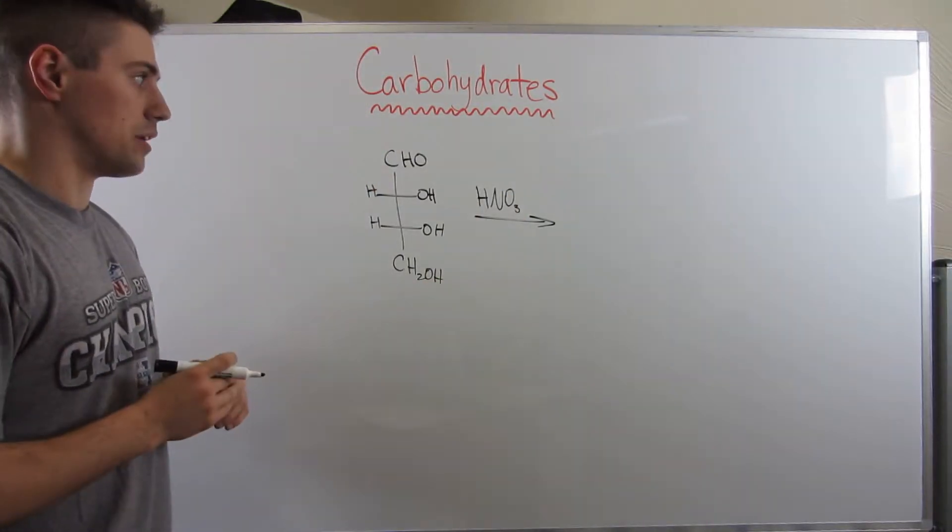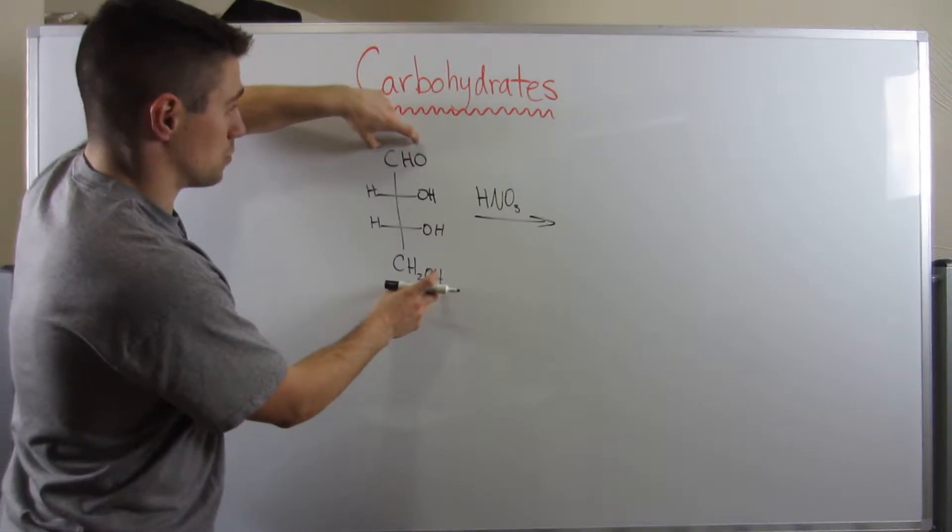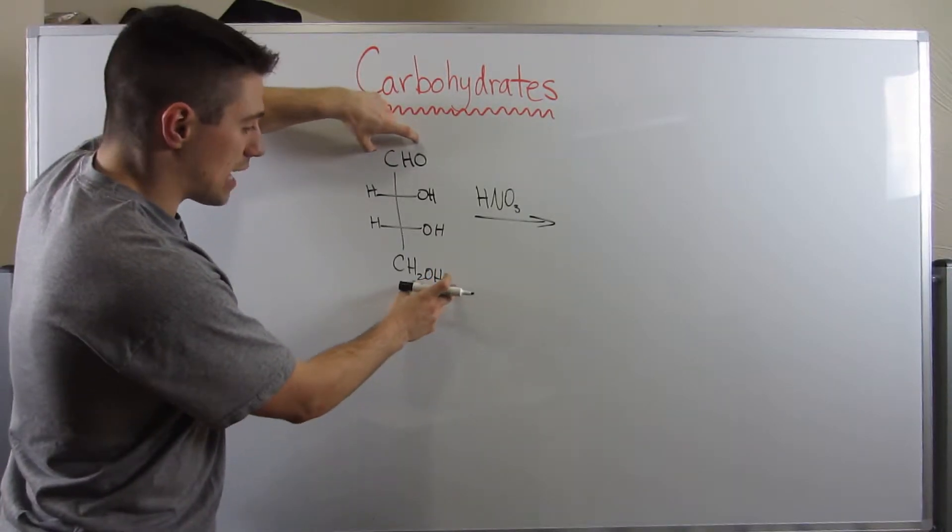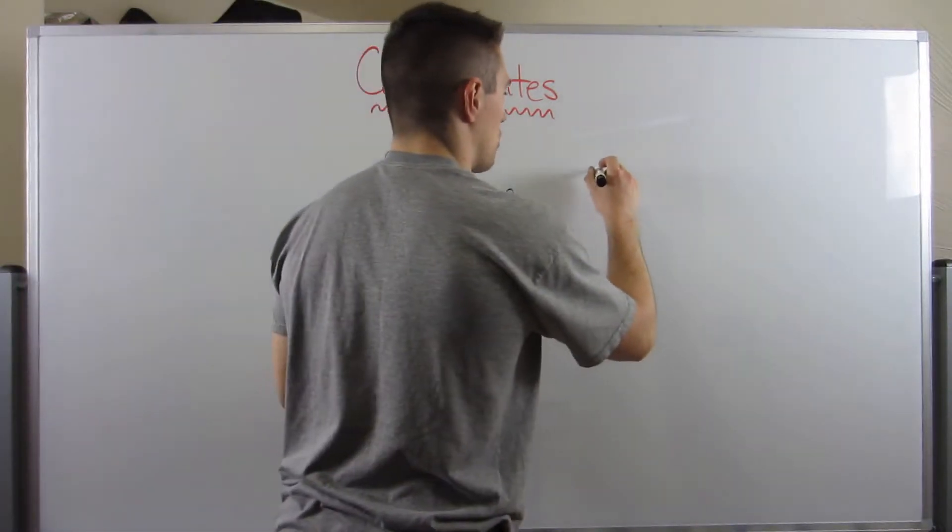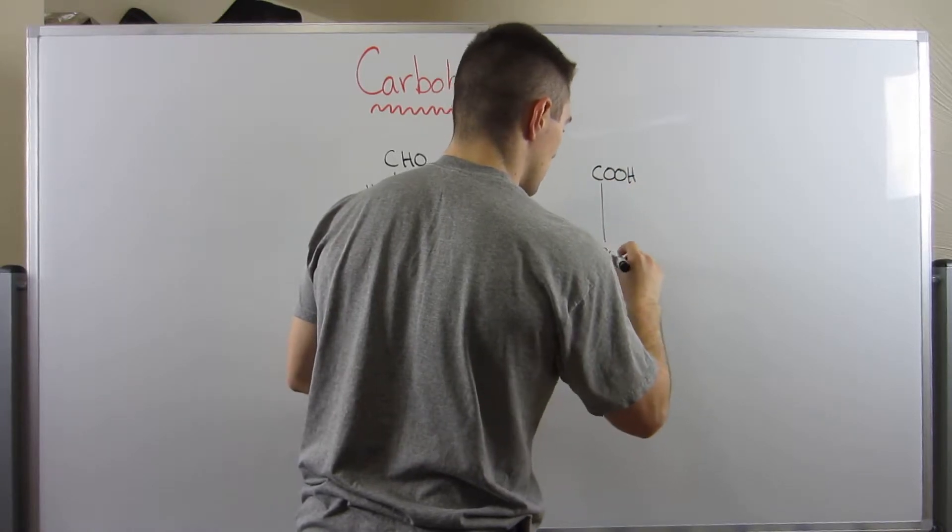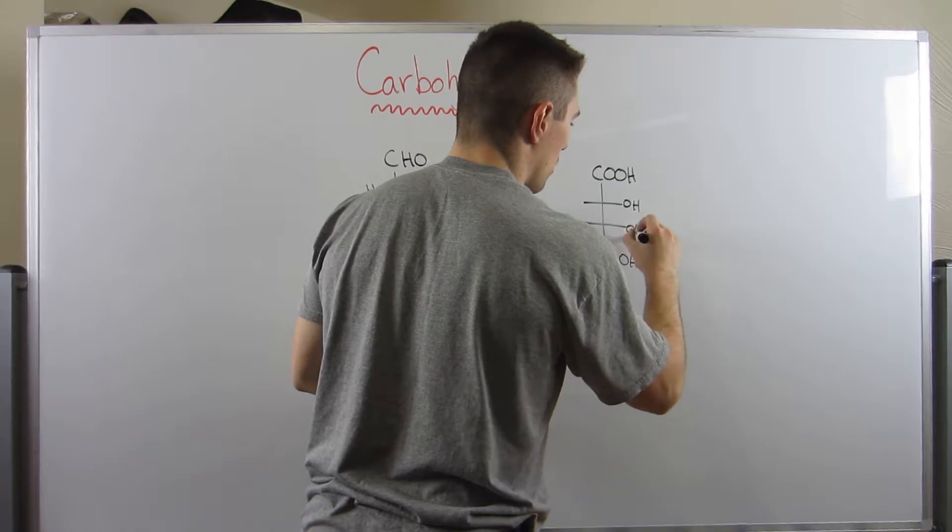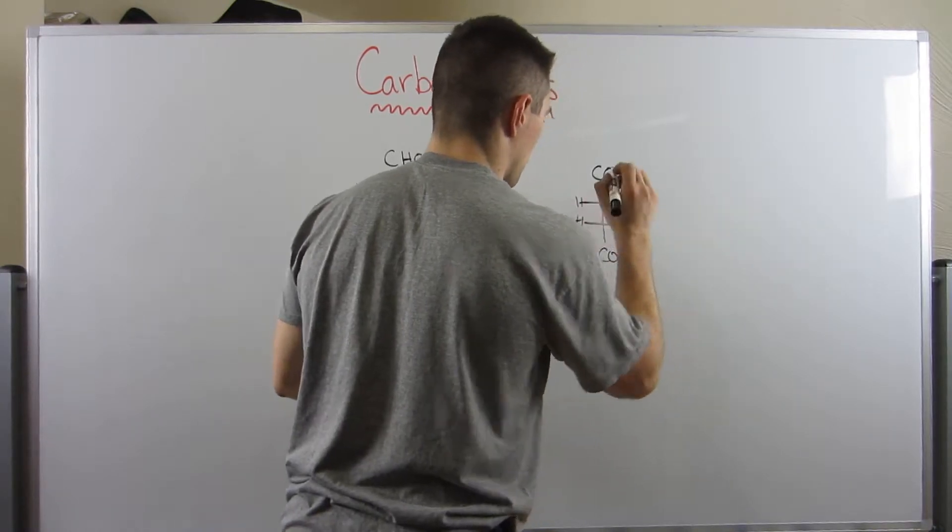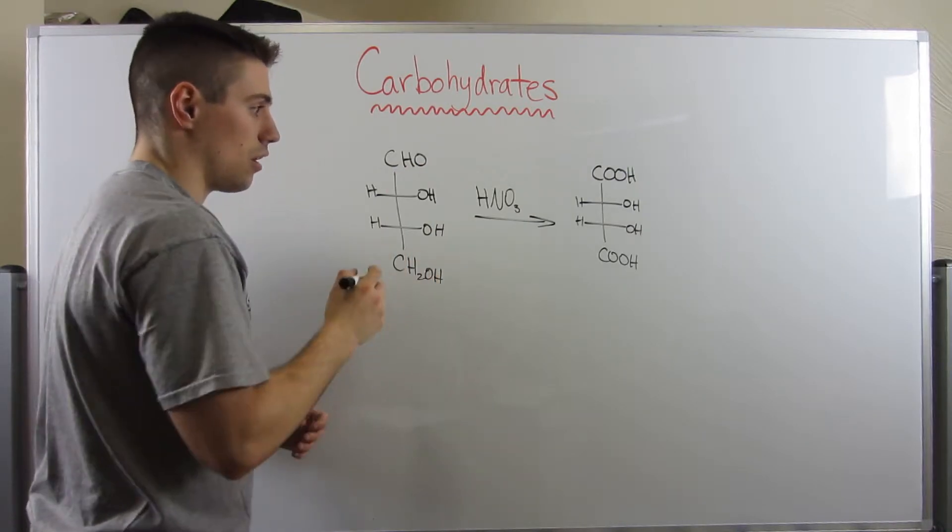If you subject a sugar to nitric acid, some good old HNO3, here's what you do. You take these two top groups, the aldehyde and this alcohol, and you fully oxidize them to carboxylic acids. So they'll look kind of like this. Everyone denotes it like this. You don't touch the alcohols within the sugar, just the end groups, the aldehyde and the alcohol.